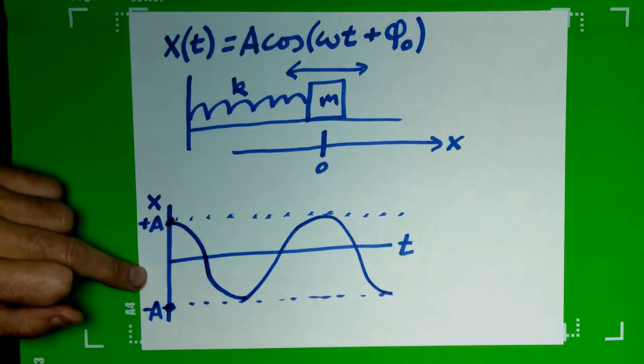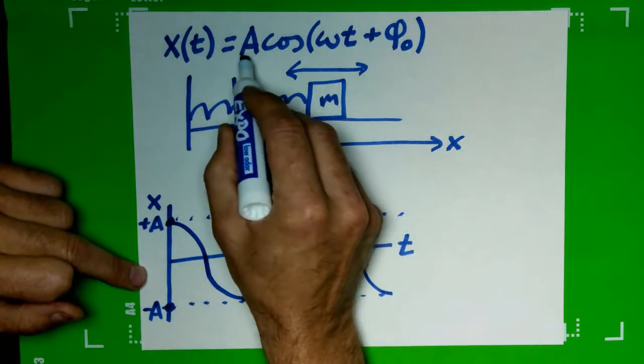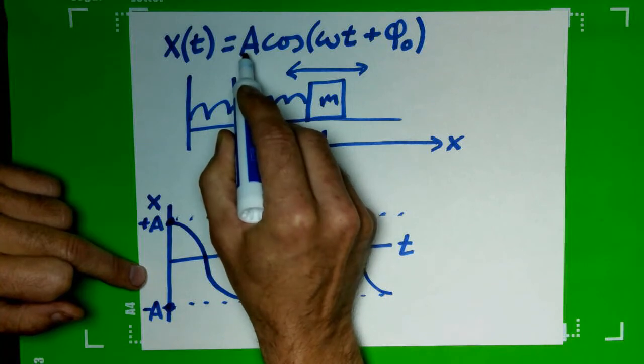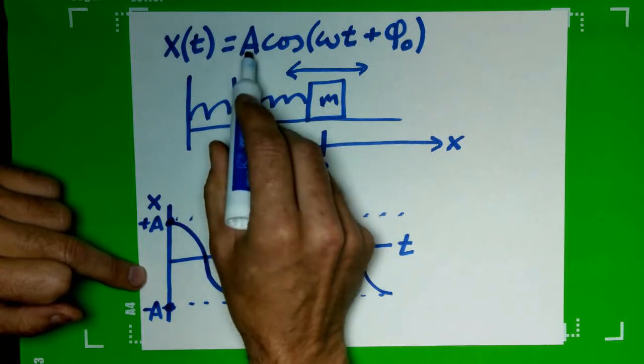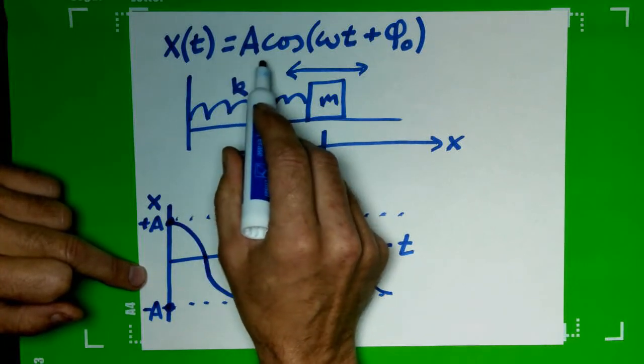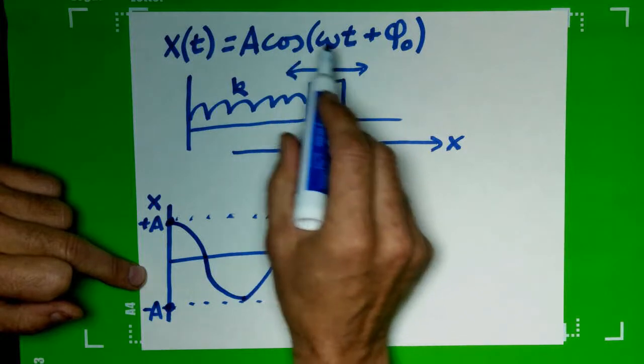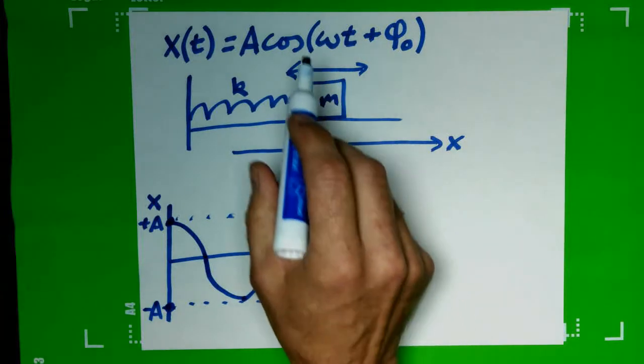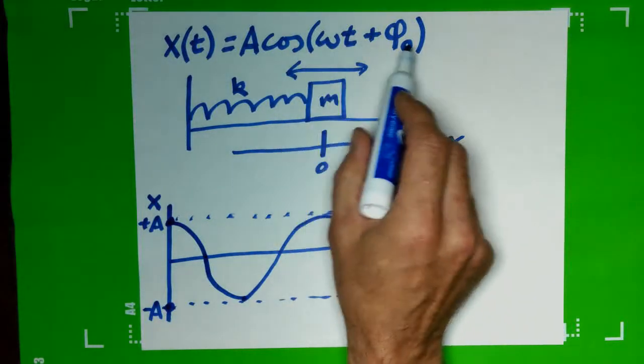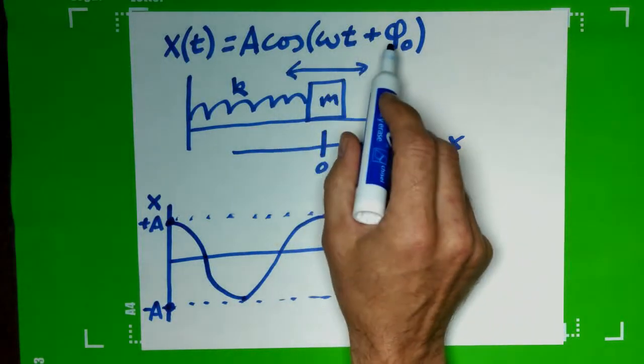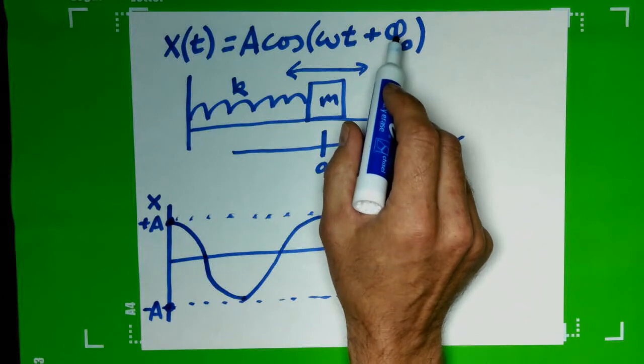So we have a fairly comfortable understanding of the amplitude A. This block will oscillate between positive A and negative A according to the cosine function. So now our goal is to try and understand more of what's going on in here. Let's focus on this phase constant.